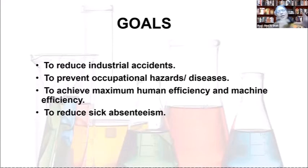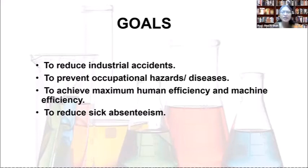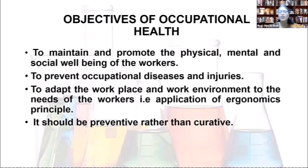The goals of occupational health are to reduce different types of industrial accidents, prevent occupational hazards and diseases caused by physical, chemical, biological, psychosocial, or behavioral agents, achieve maximum human and machinery efficiency, and reduce absenteeism.